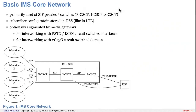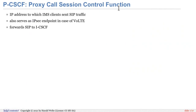The CSCF stands for Call Session Control Function. The PCSCF is the Proxy Call Session Control Function. It is the IP address to which an IMS client sends SIP traffic — really only at the IP level. In the SIP headers you will usually not have the PCSCF as the destination, but on the IP level it is where the SIP traffic is sent. It also serves as an IPsec endpoint in the case of VoLTE, not in the case of voice-over Wi-Fi, and it forwards the SIP traffic to the ICSCF.